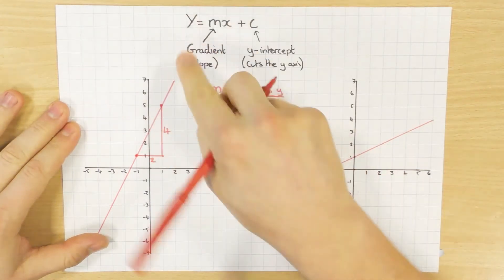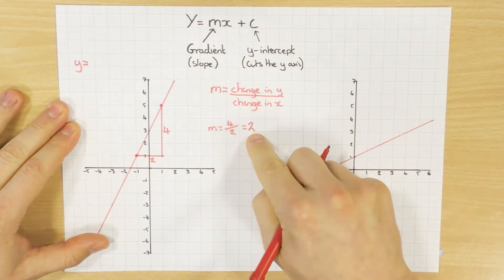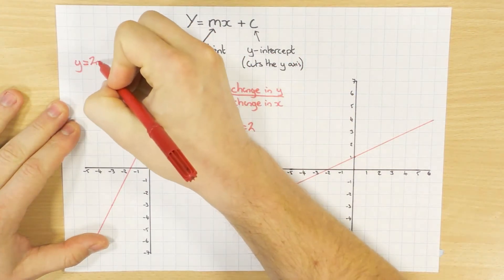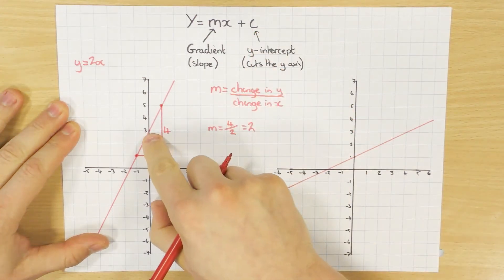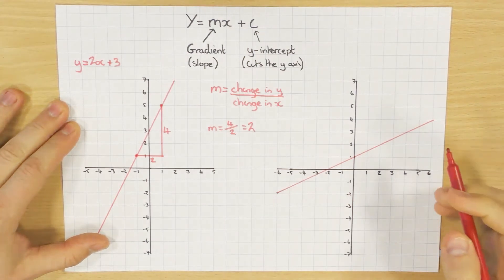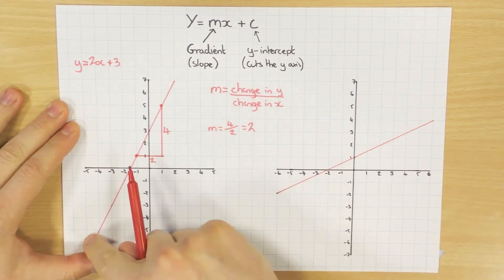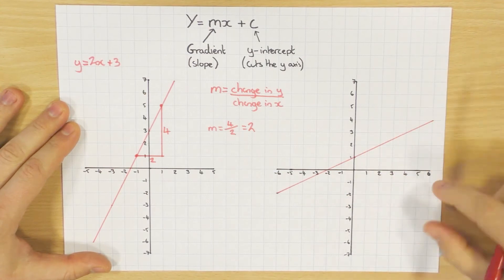So what I can do is I can substitute that into our general formula here. So y equals, I now worked out that m is 2, so 2x. And then where does it cross the y-axis? As I mentioned earlier, it crosses at 3. So it's just plus 3 at the end. And that's it. The equation of this straight line here, y equals 2x plus 3.